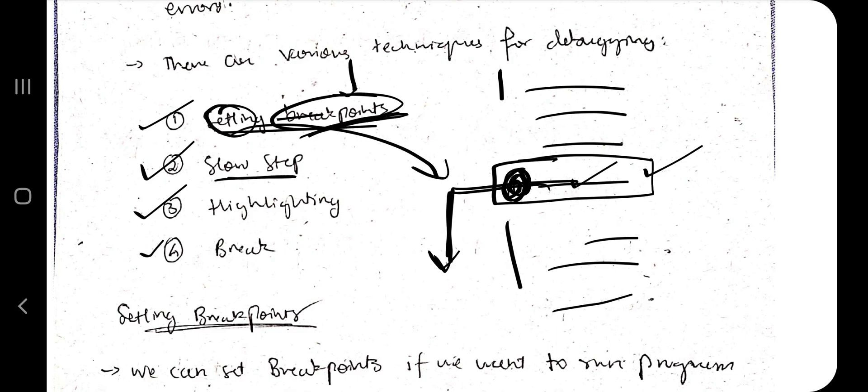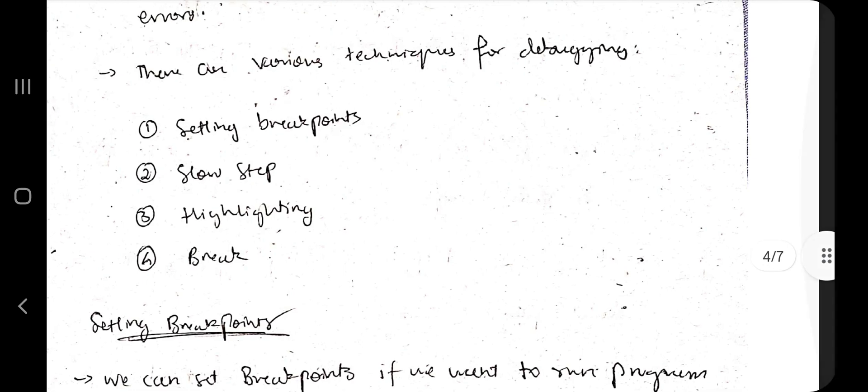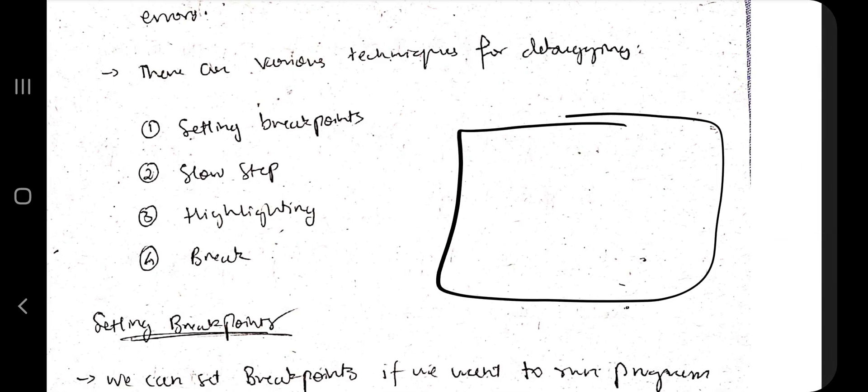Slow step means if you are executing something important to observe carefully what's happening in each step, it should be slowly. Highlighting means if this is the program and you are performing some task, first step is here, second step is here, third step is here, fourth step is here. If you want to see in which all the steps in the screen they are performed, you can use highlighting so that it will highlight where all the things has happened.